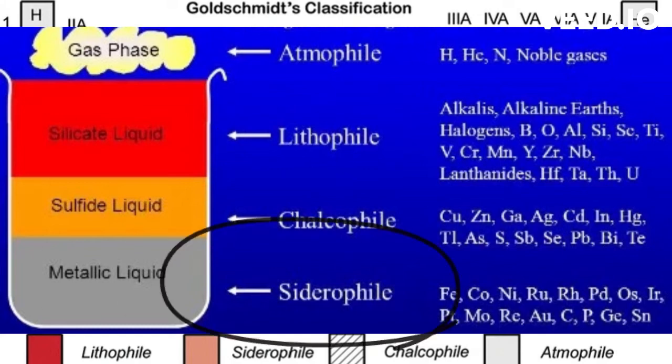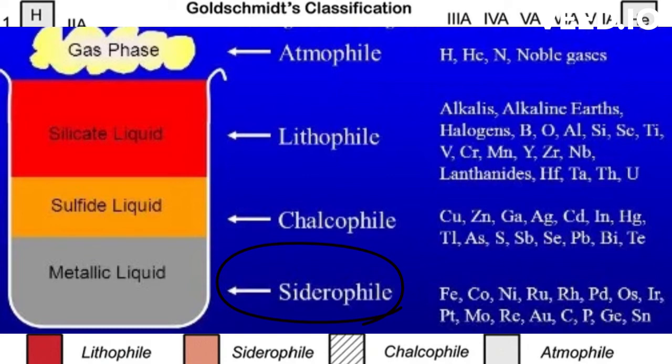Siderophiles are iron-loving elements. They are dense metallic elements that can bond and interact strongly with iron. Examples of these include platinum and iridium. As the Earth's huge quantities of iron sank to the core, the iron took along other elements that interact favorably with it. These elements are scarce at the surface of the planet, yet they are thought to be very common deep within the core where humans cannot reach them.